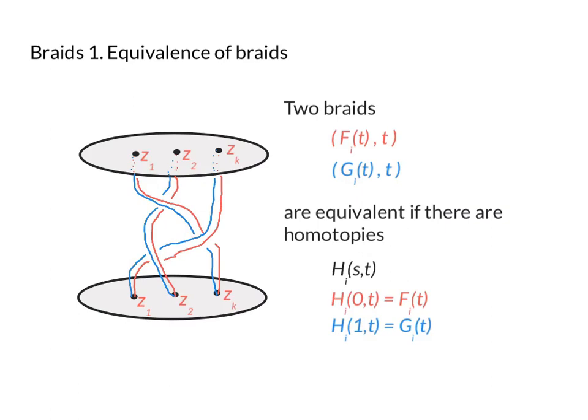And moreover, all the way along the homotopy we need H_i(s,t) to be a braid for each s. So for each s, H_i(s,t) defines a braid. In other words, we have a path in the space of braids connecting (f_i(t), t) to (g_i(t), t).